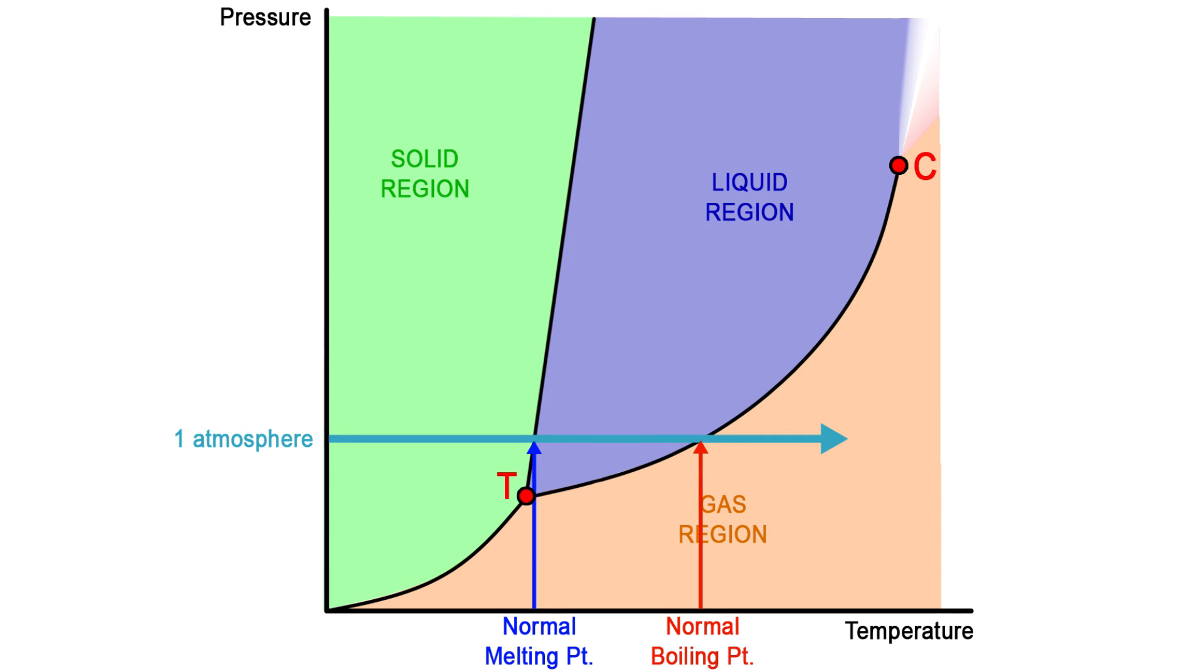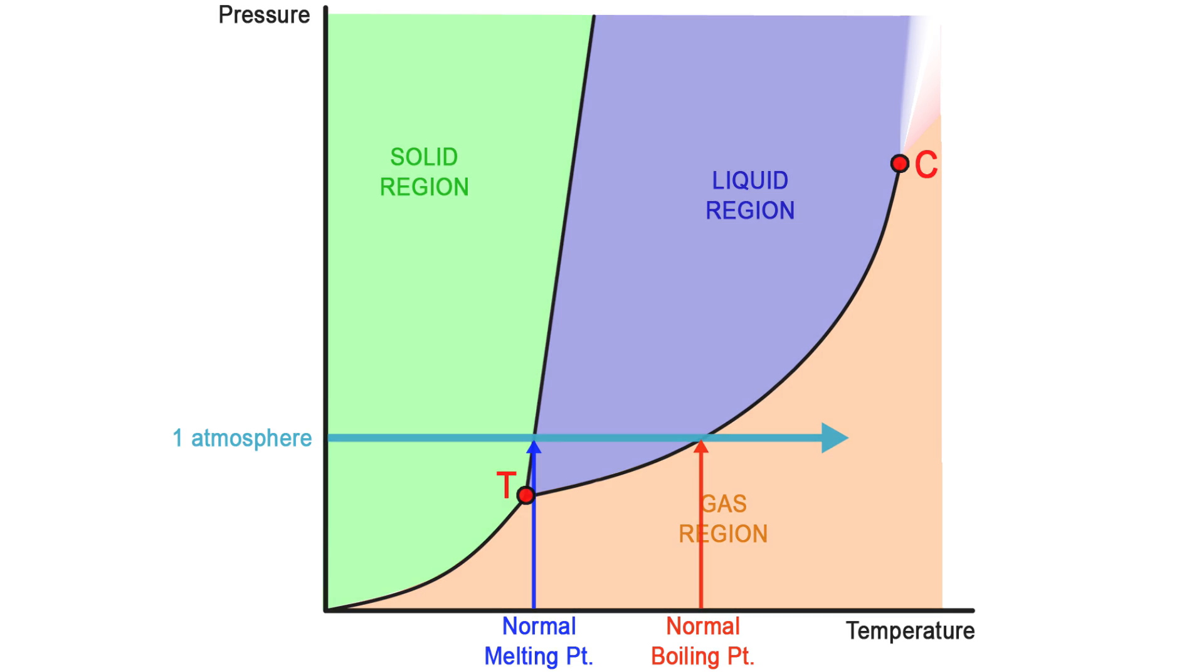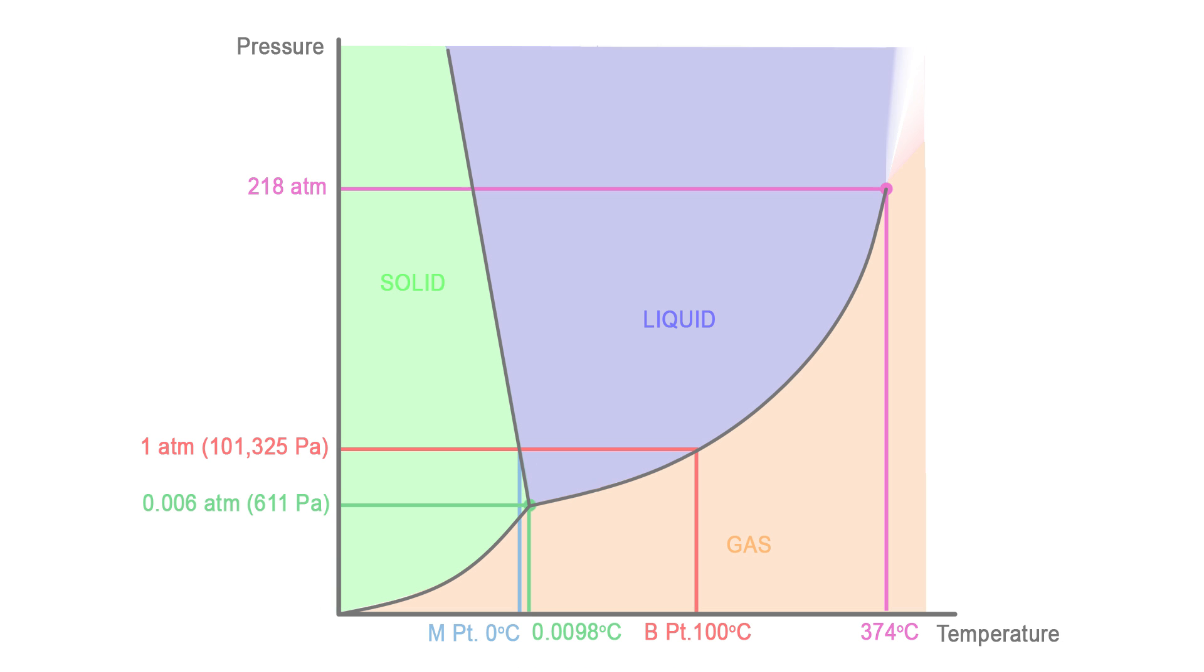Note that the triple point may either be above or below one atmosphere of pressure, meaning we may or may not have liquids for the substance on the surface of Earth. This is the PT diagram for water.